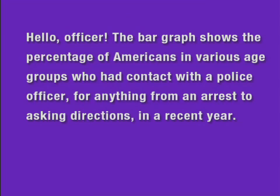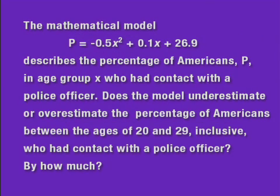The mathematical model, p equals negative 5 tenths times x squared plus 1 tenth times x plus 26 and 9 tenths, describes the percentage of Americans, p, in age group x who had contact with a police officer.